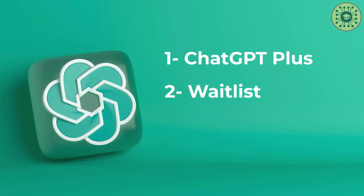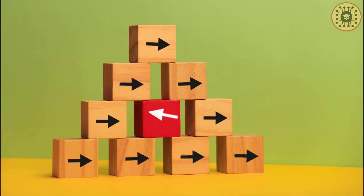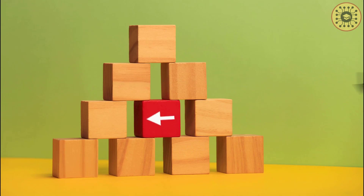Another way to access GPT-4 is to use Bing — the search engine developed by Microsoft. ChatGPT was used in this engine before, but Yusuf Mehdi, corporate vice president at Microsoft, announced that they changed the engine behind Bing's preview to GPT-4. So you can access GPT-4 using Bing Chat, though you still have to sign up for the waiting list. There are other ways to access GPT-4, but these are the easiest ones — if you know another method, write it in the comments.